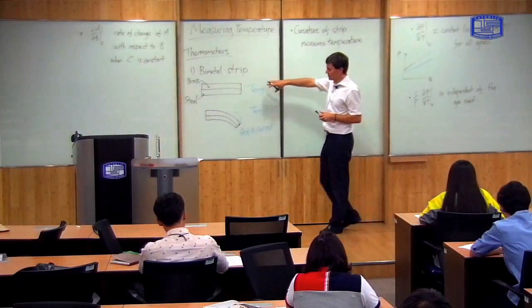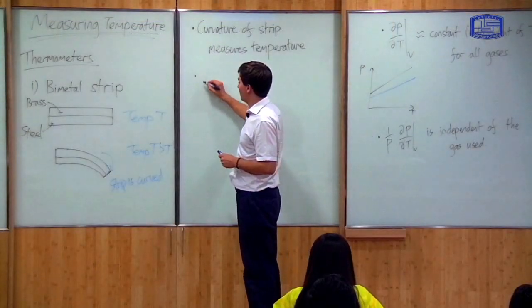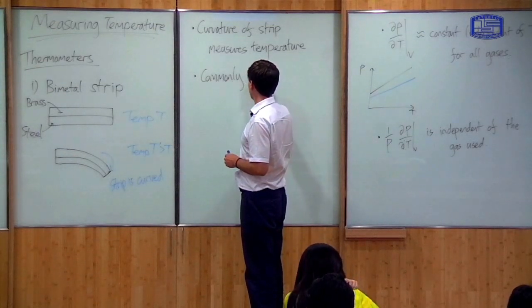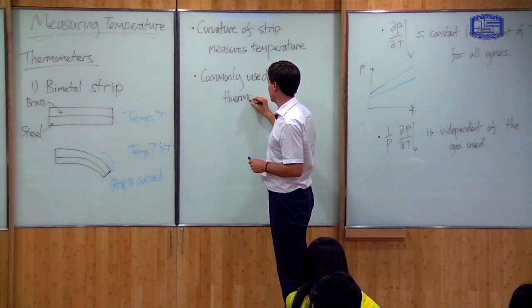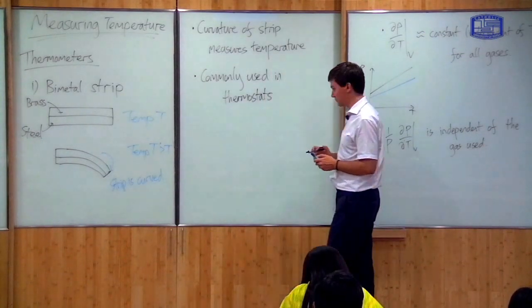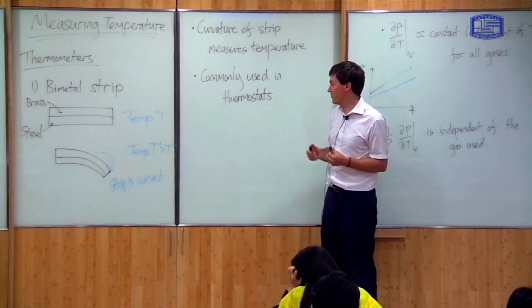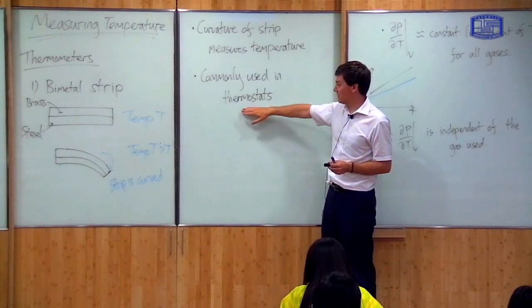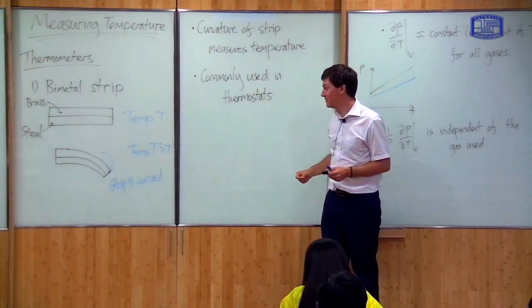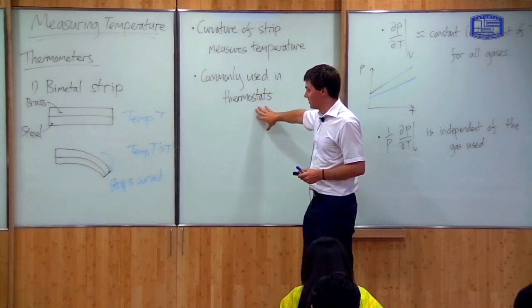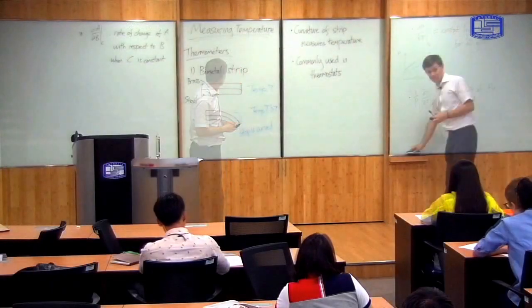This is a real device which was in quite common usage until about ten years ago, and it was commonly used in thermostats — the device in a house or office which controls the temperature. You can set it so that if the temperature goes above 25 degrees the air conditioning comes on, for example. Such thermostats used to be controlled by these bimetal strips, although more recently new technology is more commonly used.